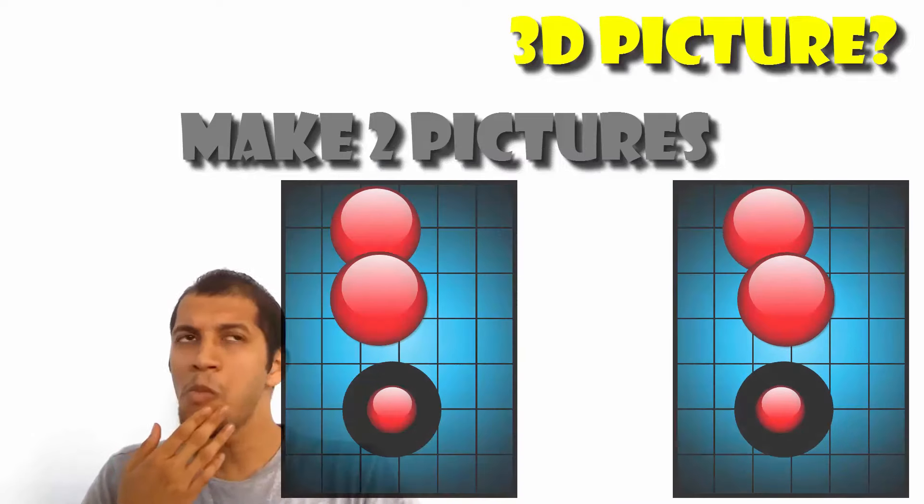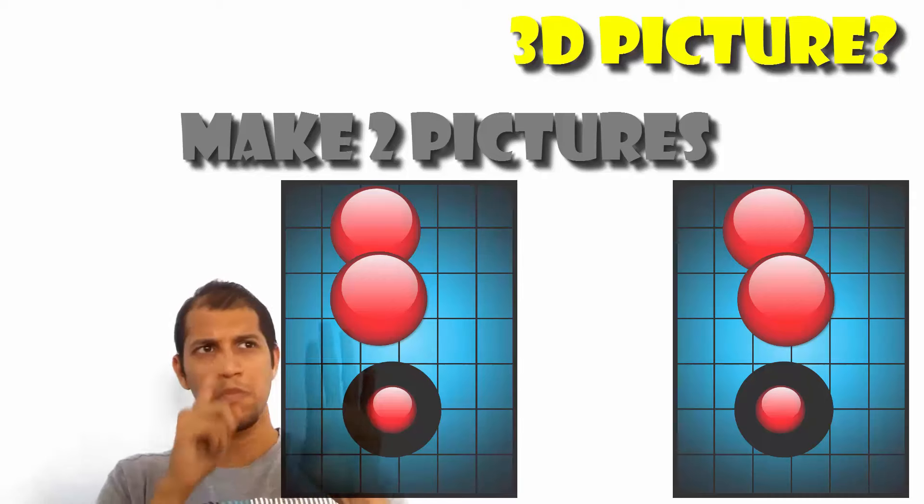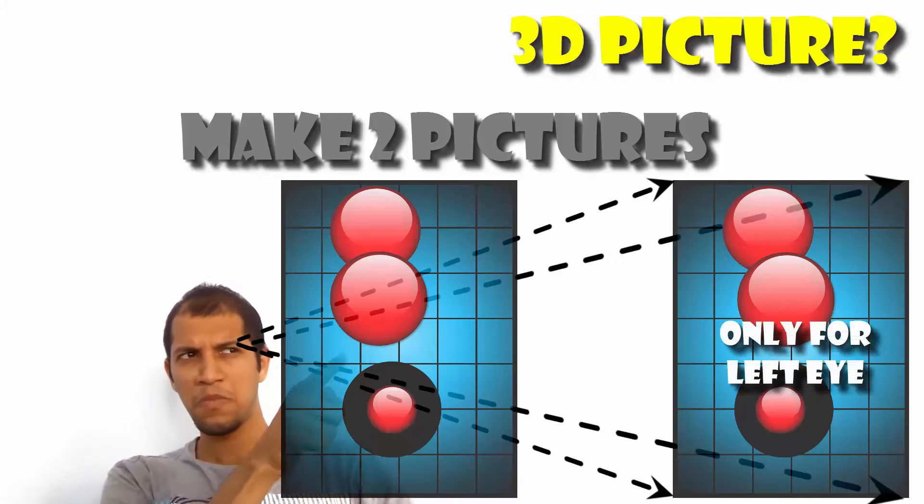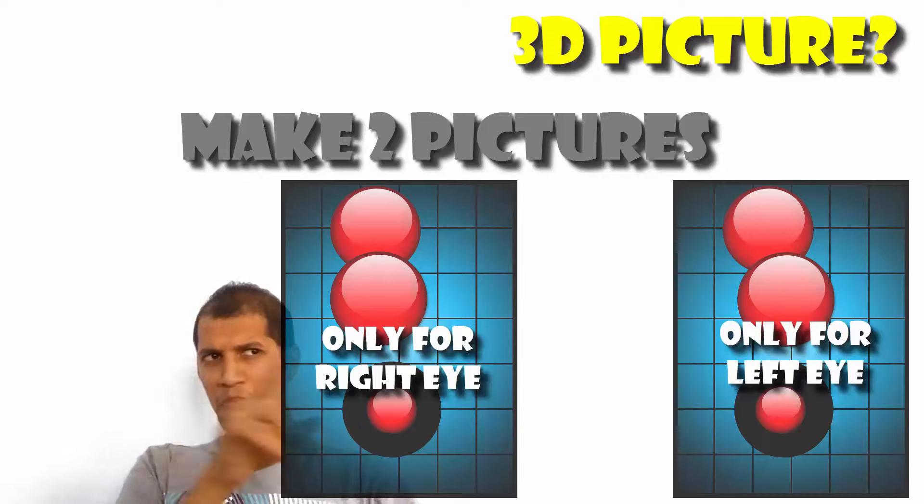But how do you do this? For example, how do you make sure that your left eye only sees the picture meant for it and not the one meant for the right eye?